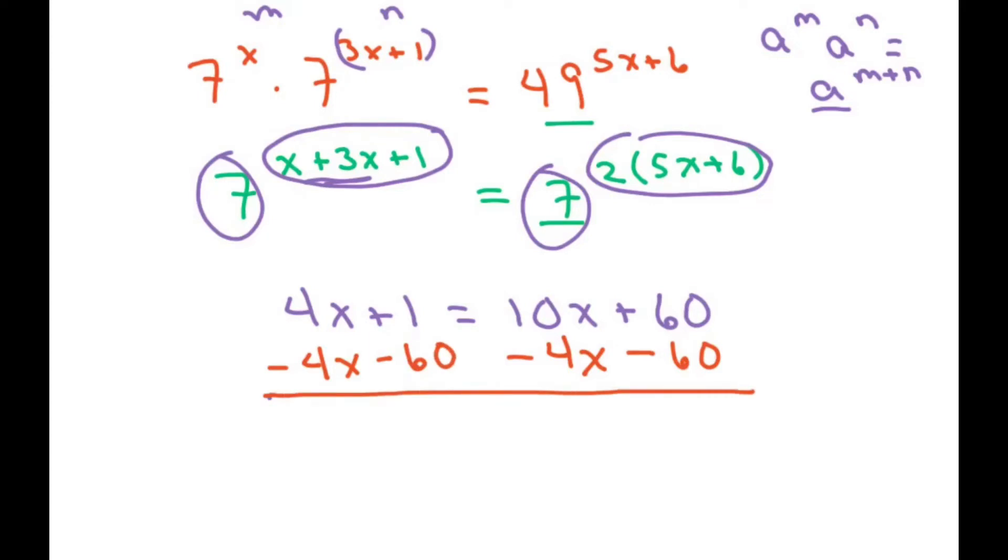So when you do that, these cancel and this will be negative 59. And when you subtract these two, you get 6x and these zero out.